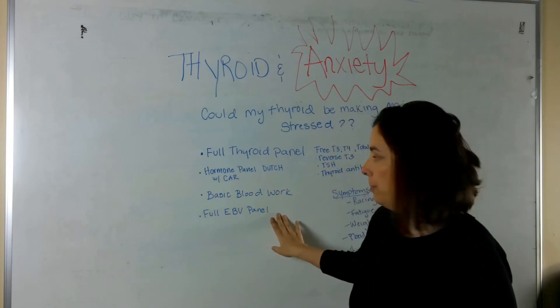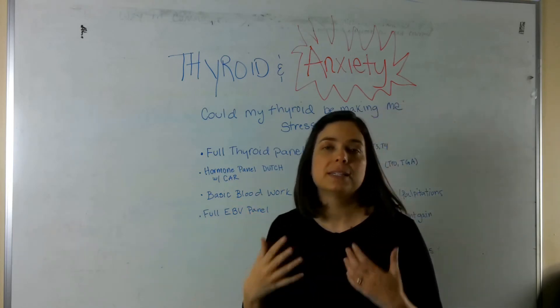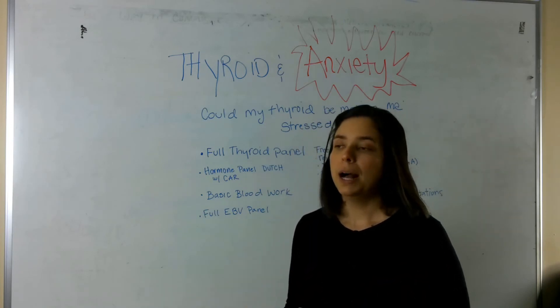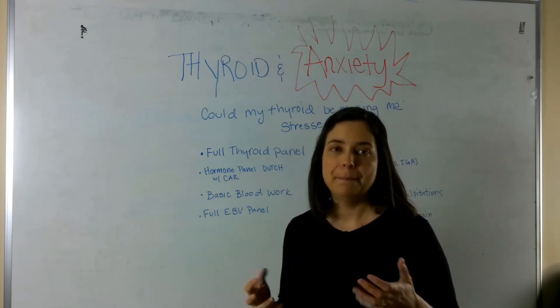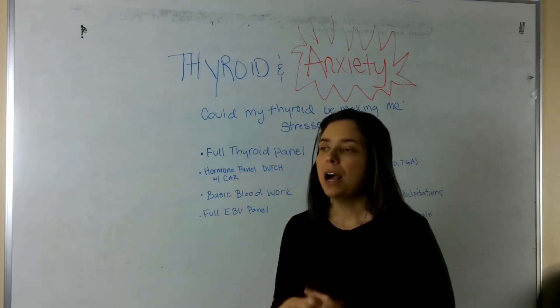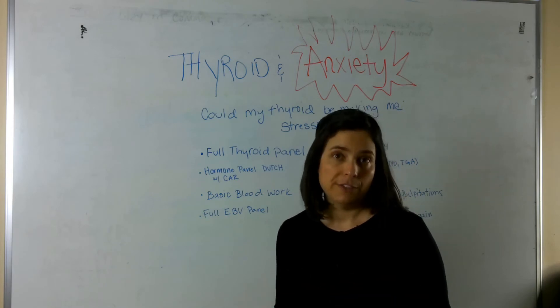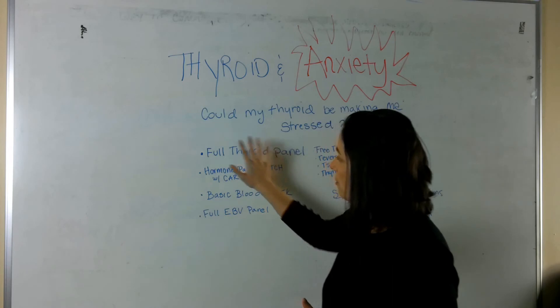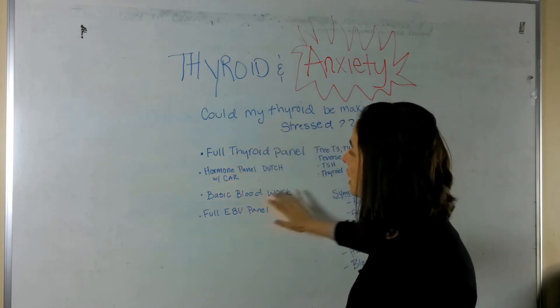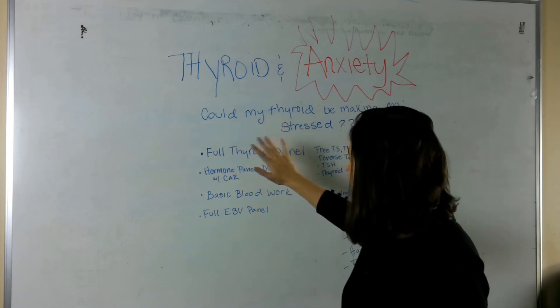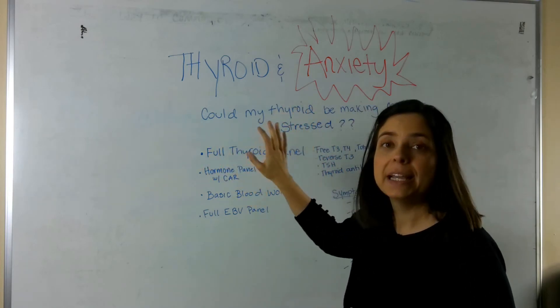And then, of course, the full Epstein-Barr panel, unless we suspect it's some other thing like cytomegalovirus, or if you've had lots of herpes outbreaks, we might check for that. We might check for shingles, if you've had a bunch of shingles outbreaks. So, all those can be run, but finding out the real underlying cause as to why the thyroid is dysfunctioning is the key.